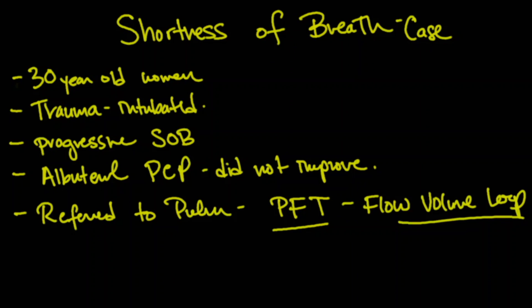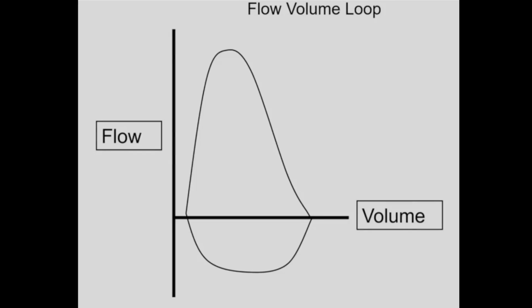Let's talk about that flow-volume loop that she had done before we even saw her. What we're looking at here is a flow-volume loop with flow going out on the positive y-axis and air going in on the negative y-axis. We start at the far end after you've blown all the air out of your lungs, then take a breath in — flow starts to go in, you're breathing air in, increasing the volume, until your lungs are absolutely filled up. This is the inhalational aspect of the flow-volume loop.